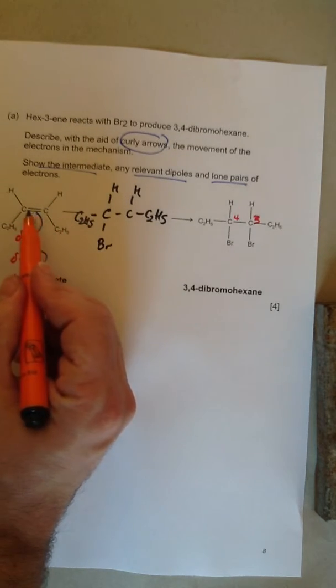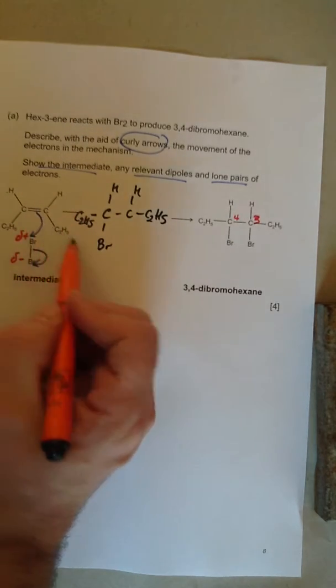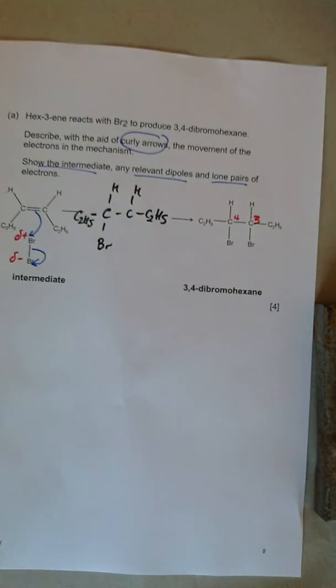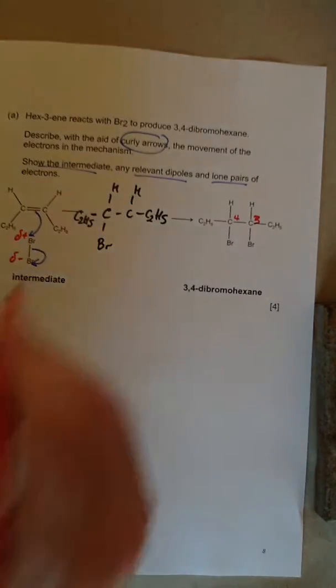Both of the electrons from that bottom bit of the double bond have gone to make that bond there. So that carbon, all of a sudden, doesn't have the right number of electrons. It's missing an electron. And if it's missing an electron, it's going to be positive.